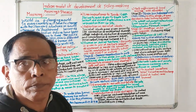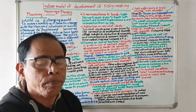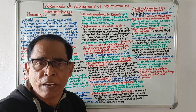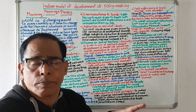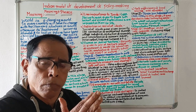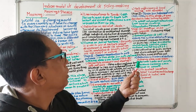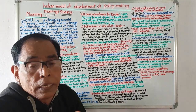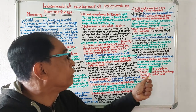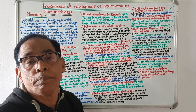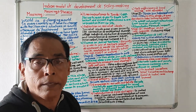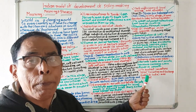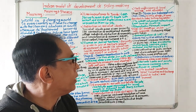Third, privatization of public sectors and disinvestment were emphasized after 1991. Since many public sector units were running at a loss, it was decided to hand them over to private parties or withdraw government share and give it to private investors. Fourth, reforms were made in the finance sector: private banks and private insurance companies were allowed to operate. Additionally, SEBI (Securities and Exchange Board of India) was formed to protect investors and regulate the stock exchange.